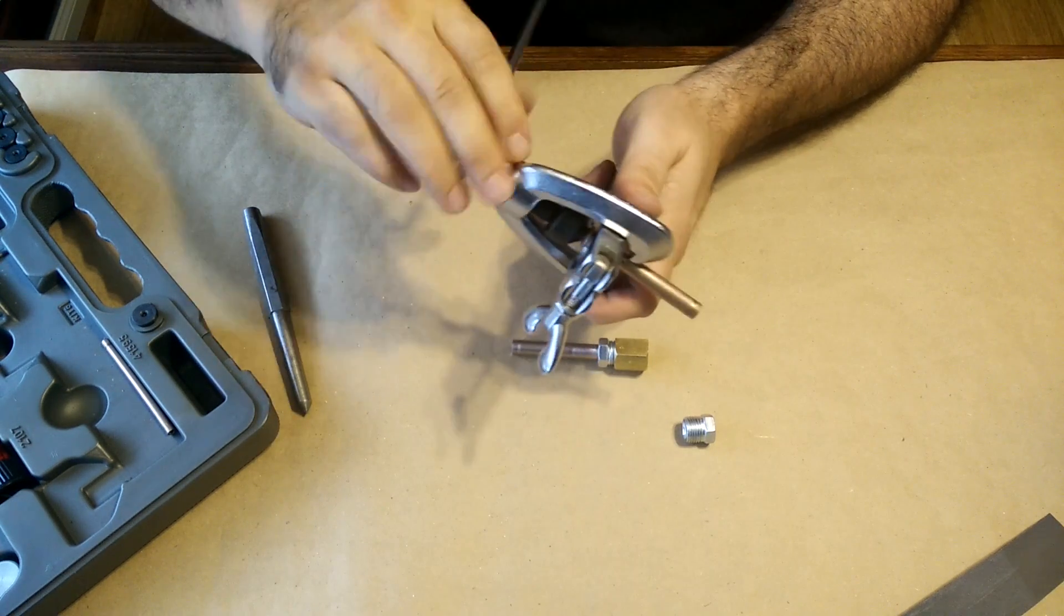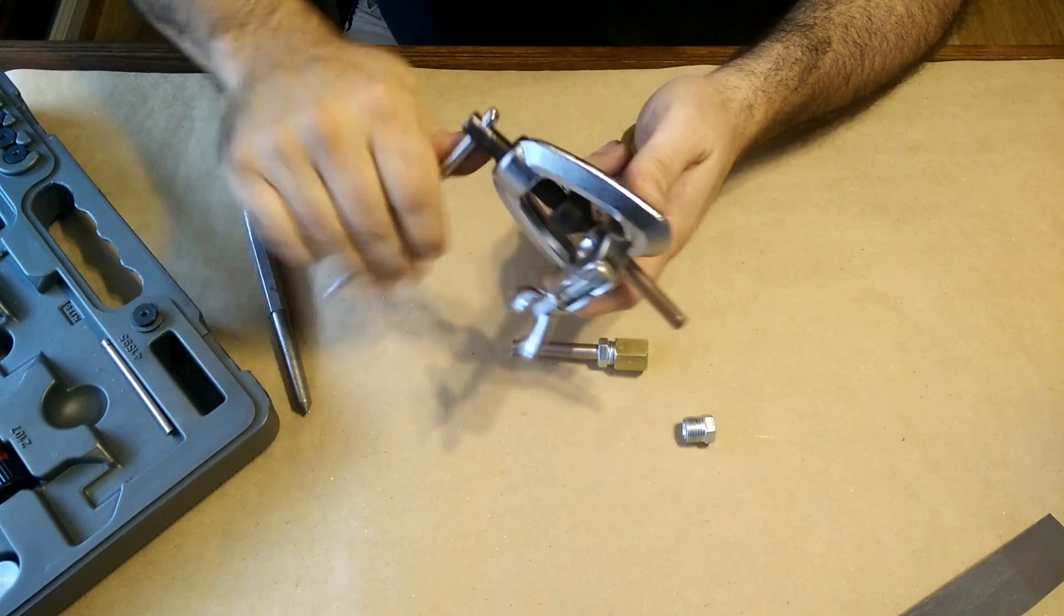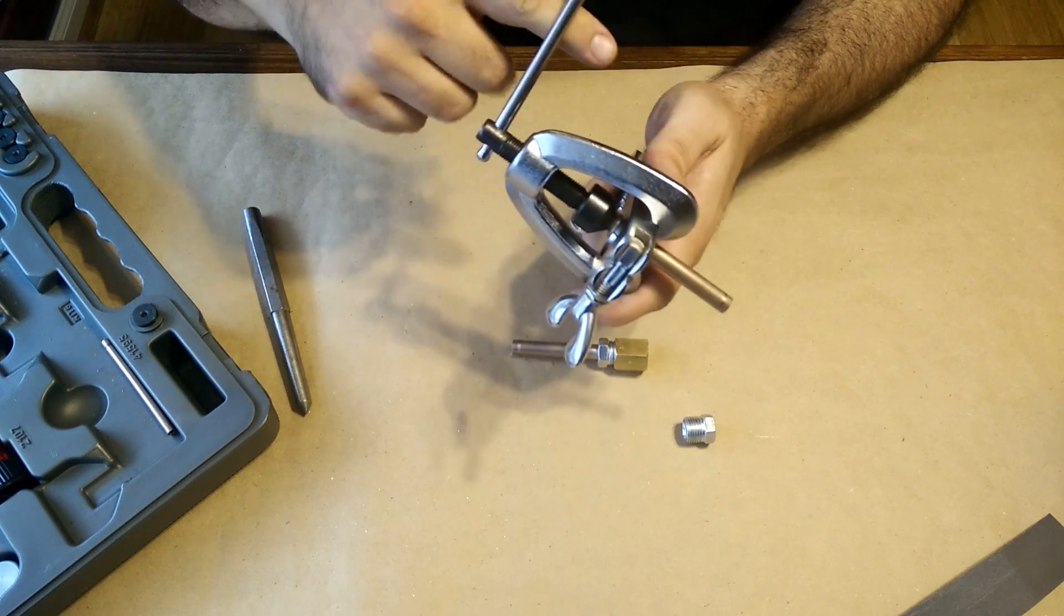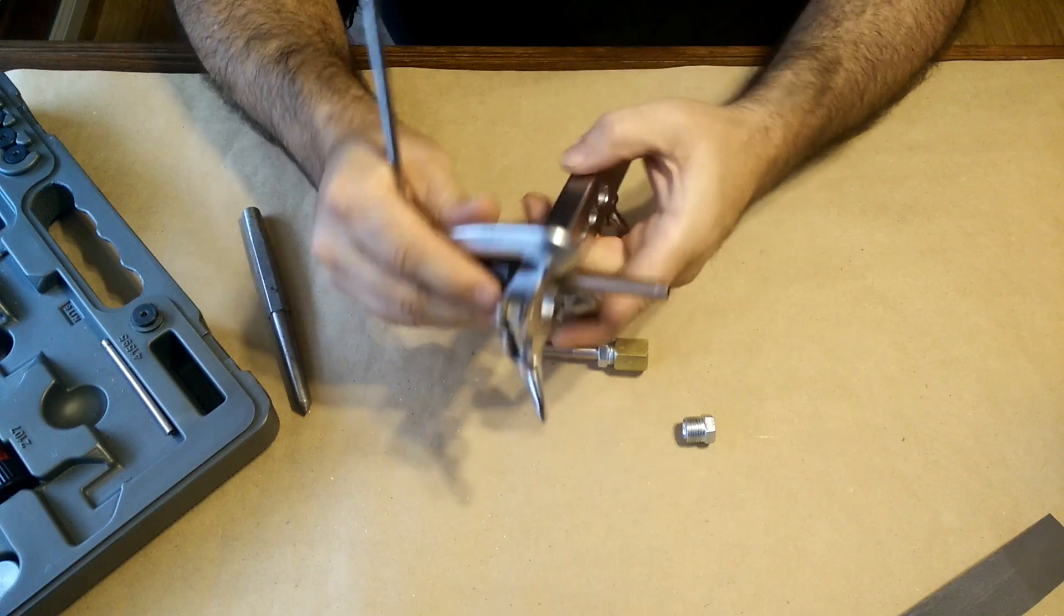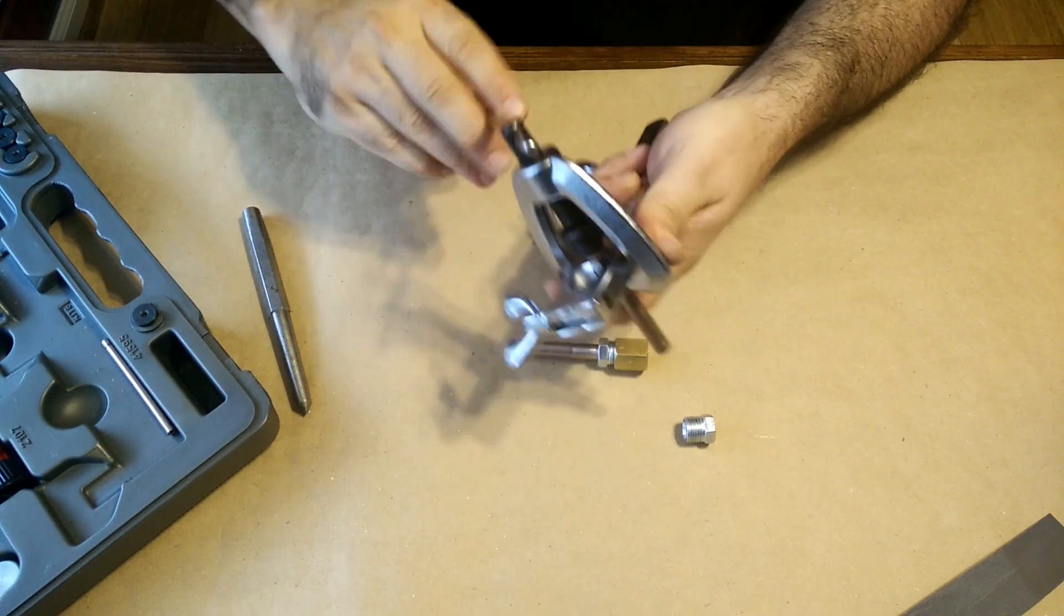So again, you want to make sure that your tool is seated nicely up against the frame of the tubing holder. Otherwise you can get a hole that's all oblong and crappy looking. So that looks pretty good. You get in here, you tighten it down.